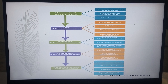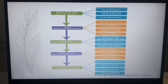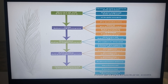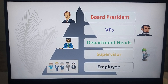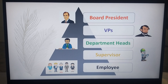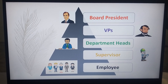We will tackle a simpler version. We have here the hierarchy of employees: first is the board president, then the VPs or vice presidents, then the department heads, then the supervisor, and the employee itself. On top of the pyramid is the board president, followed by the vice presidents, third is the department heads, then the supervisor, and finally the employee.